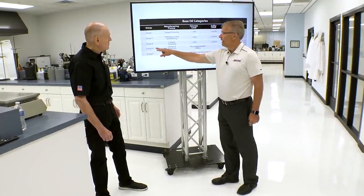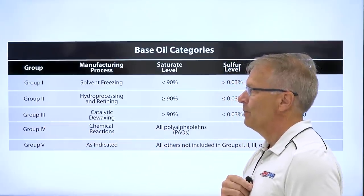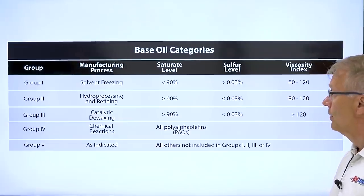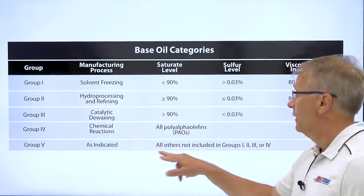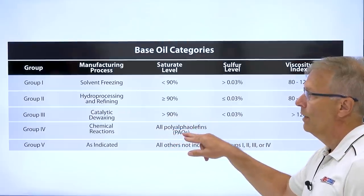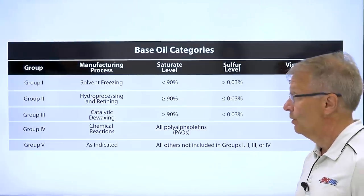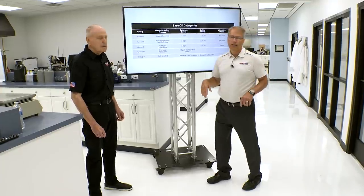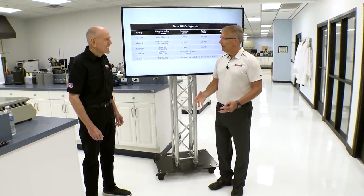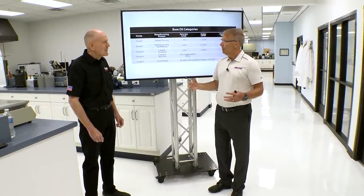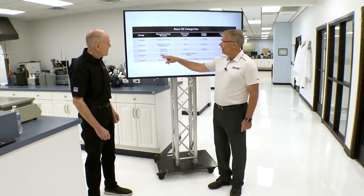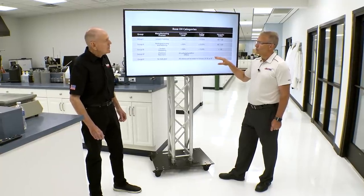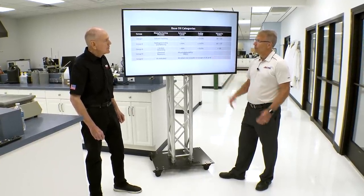Group IV is a category defined specifically for polyalpha olefins — PAO. Polyalpha olefins are a category of molecules that are really good for lubrication, great for viscosity index, and really good for oxidation resistance. This does not come out of the ground — it is a chemically synthesized molecule, making it very pure and very controlled. As a result, that molecule imparts really good properties to the lubrication products made with it.